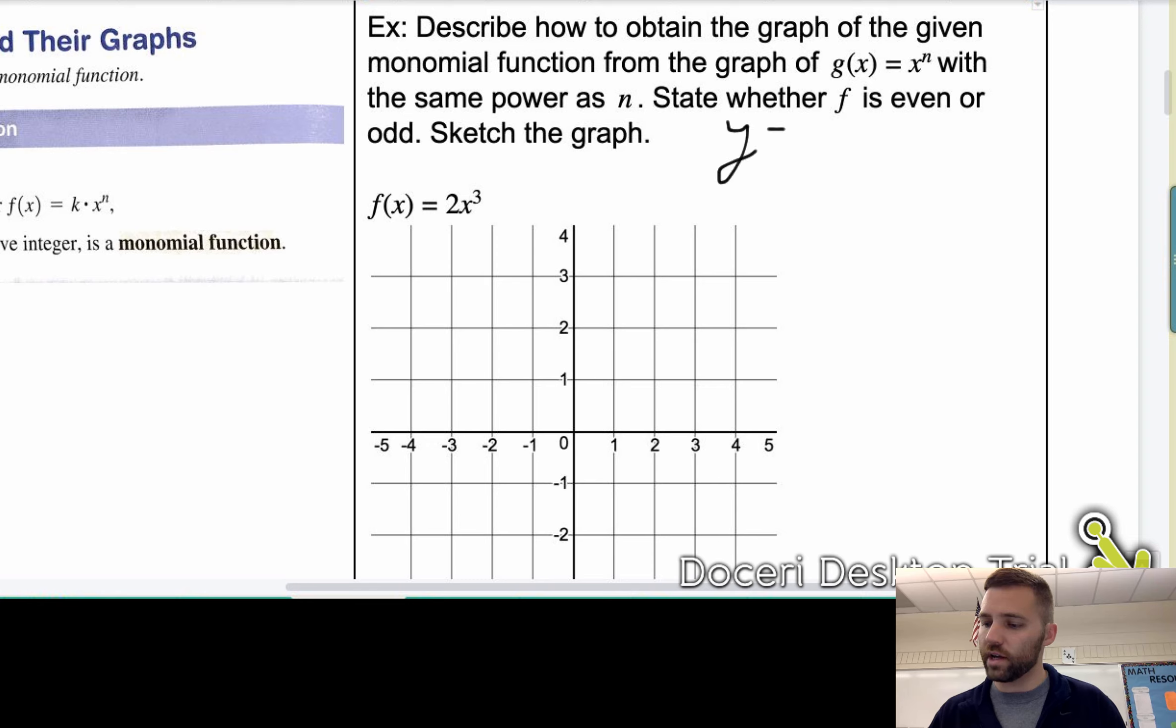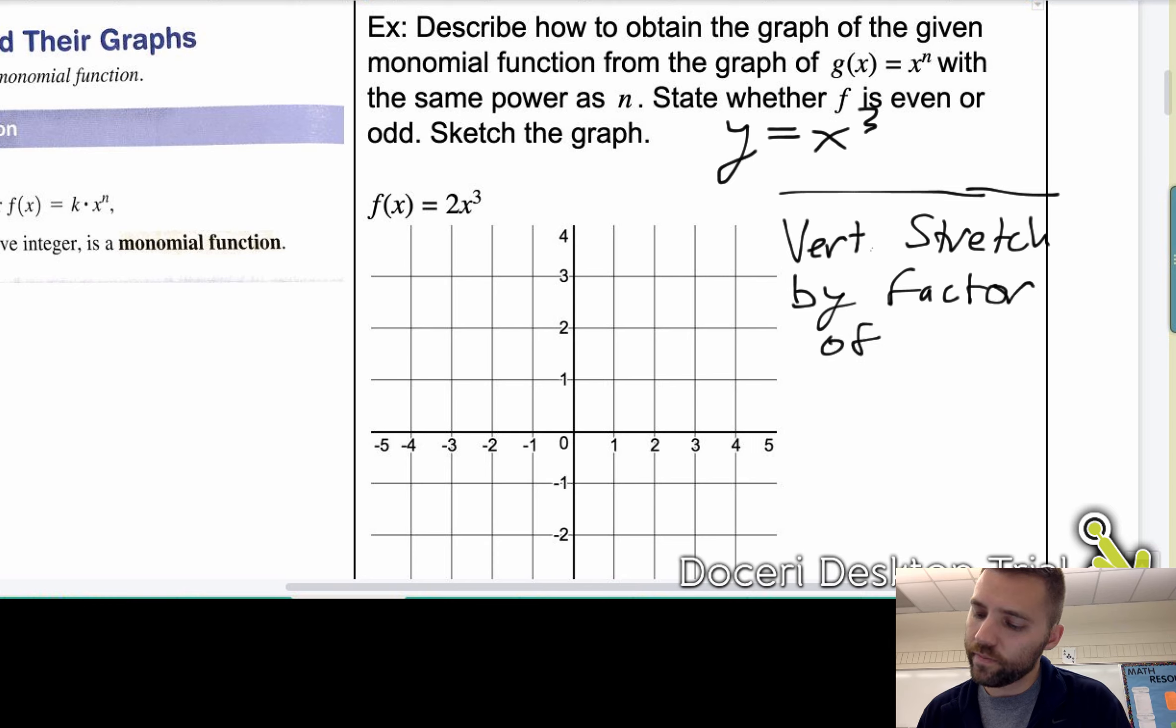So I'm just going to write up here that we've got y equals x cubed. And how do we change that? Well, if we multiply by a 2 on the outside of the function, it's going to cause a vertical stretch by a factor of 2. Okay. So I guess we can write that down. We have a vertical stretch by a factor of 2. And so that answers that.